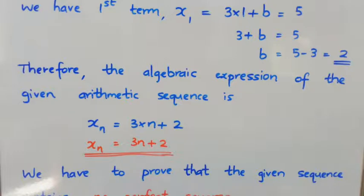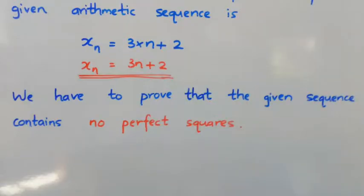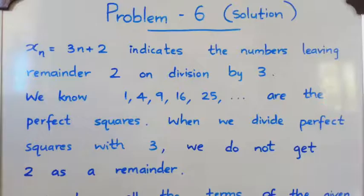Now we have to prove that this arithmetic sequence contains no perfect squares. xn = 3n + 2, which means when we divide by 3, we get remainder 2. These are the numbers xn indicates.